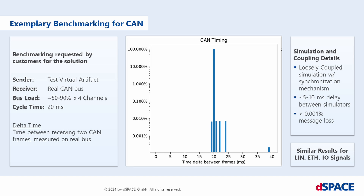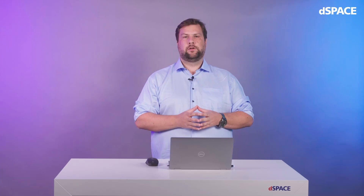As you can see, most CAN messages arrive in time. There is a small jitter and from time to time a single CAN message gets lost. However, the maximum delay time still stays between 5 to 10 milliseconds. The recommendation is: when you have cycle times of 10 milliseconds and more, you can use this coupling solution.